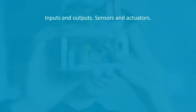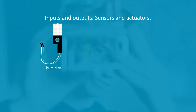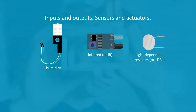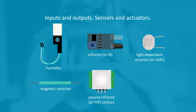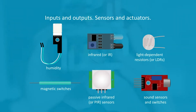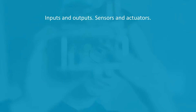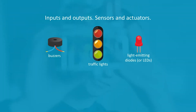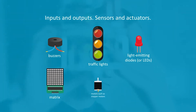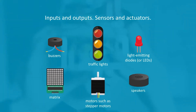The opportunities and limitations of your kit depend on the number and variety of sensors and actuators you have available. These might include humidity, infrared or IR, light-dependent resistors (LDRs), magnetic switches, passive infrared or PIR sensors, sound sensors, and switches. The outputs you might have include buzzers, traffic lights, light-emitting diodes (LEDs), matrix, motors such as stepper motors, and speakers.